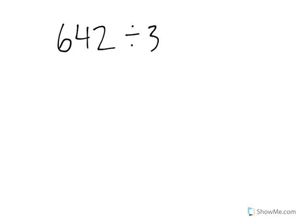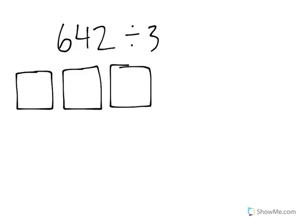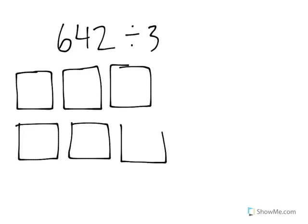We're going to look at the problem 642 divided by 3. Now what this problem actually means is we're going to start with 642, which I'm going to represent over here, and then we're going to take this number and split it into three equal groups.